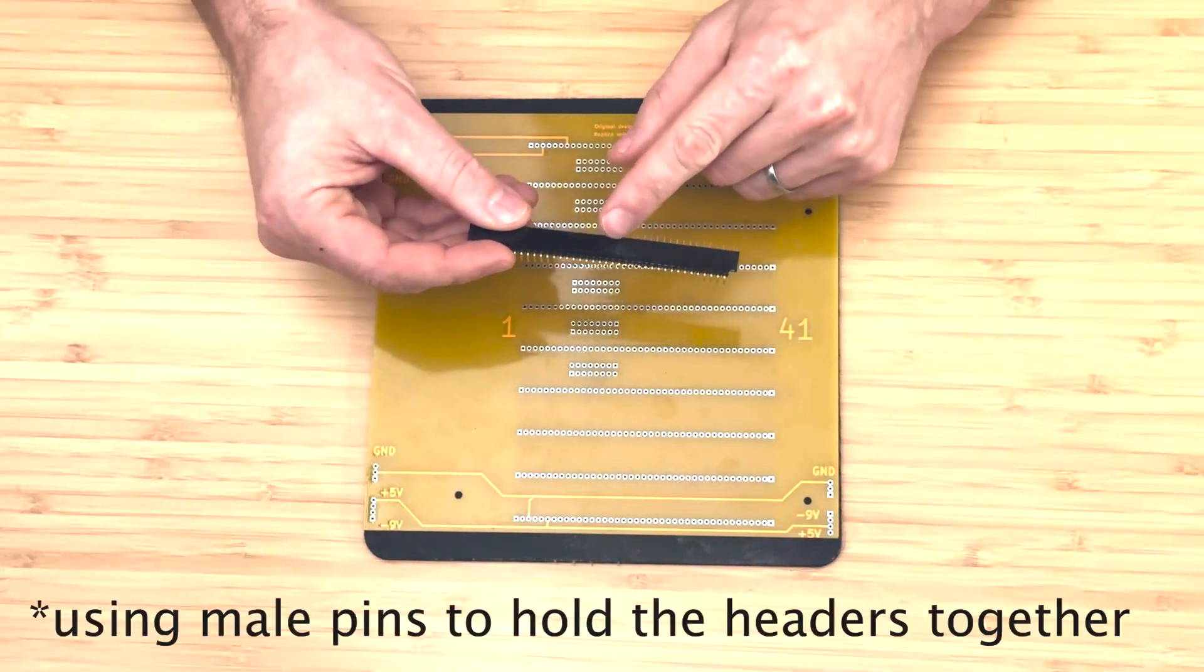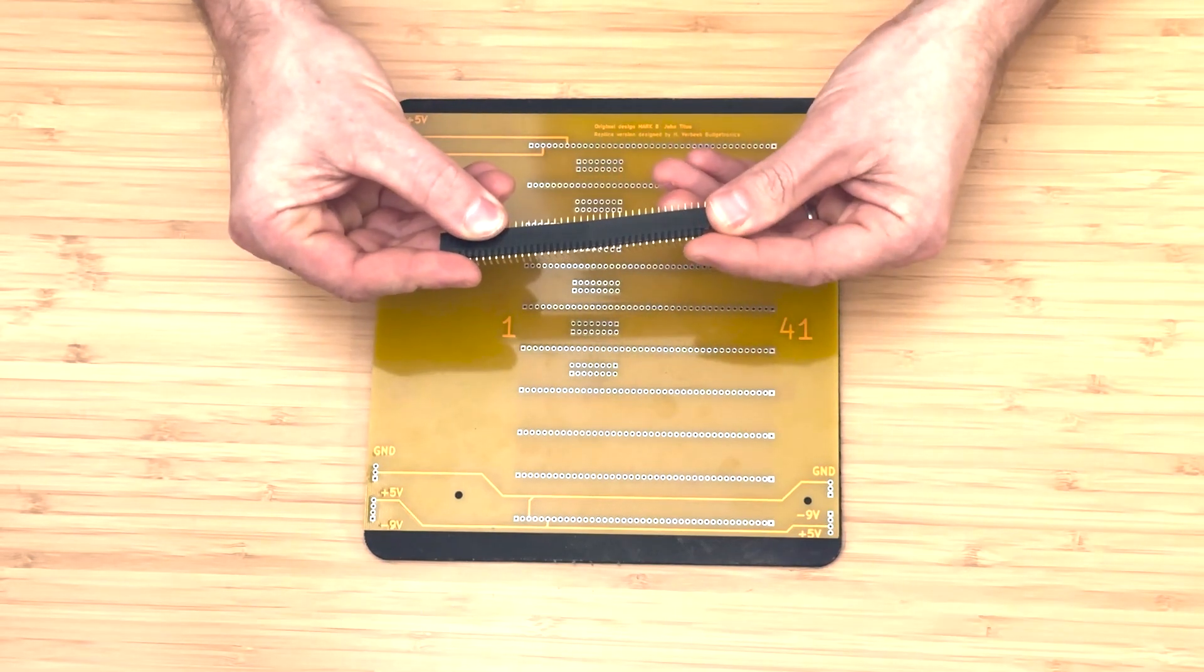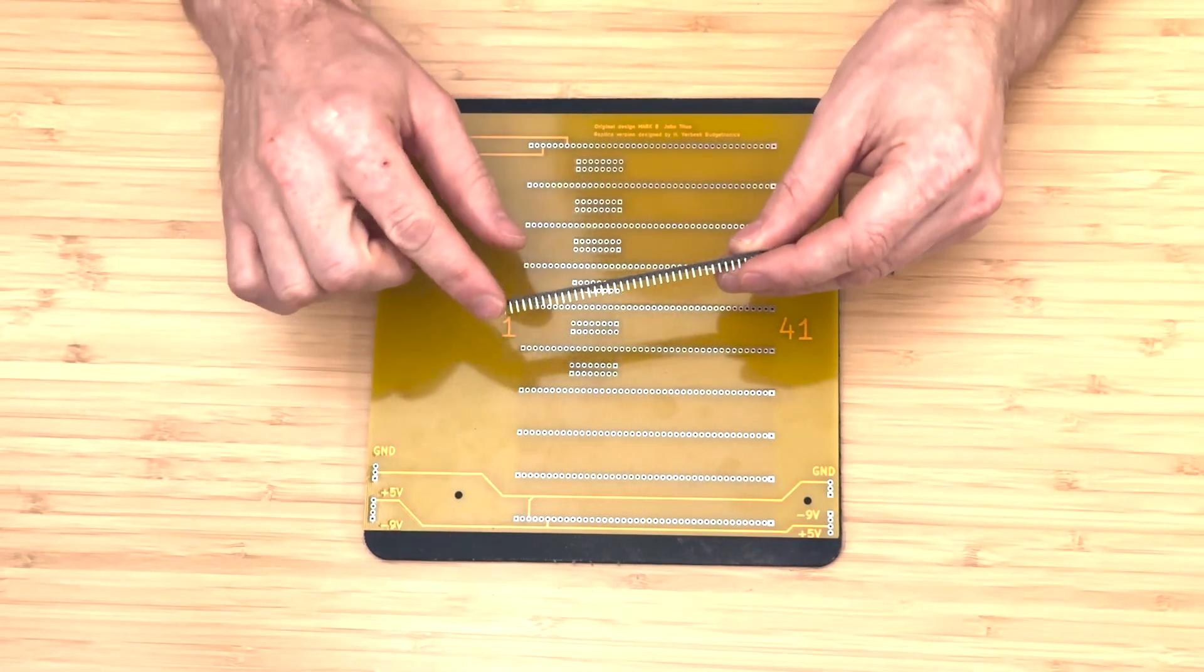Our approach will involve splitting these connectors and then splicing them together to create a functional 41 position connector. To illustrate, here's an example of what the final setup will look like. Let's go ahead and install these headers.